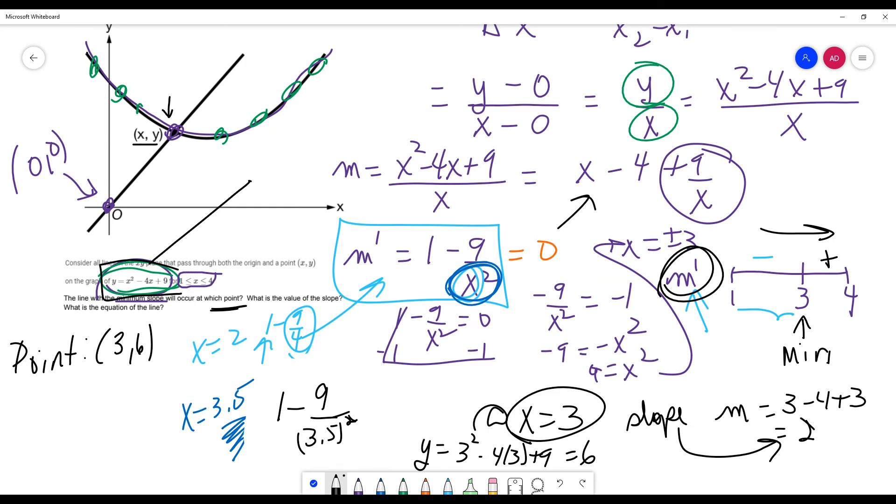And then, of course, the equation of the line. Well, an equation of a line that goes to the origin, has a slope of 2, is just going to be y equals 2x.